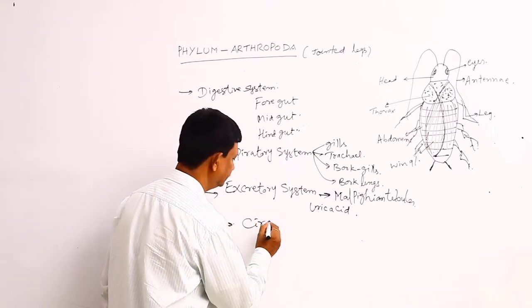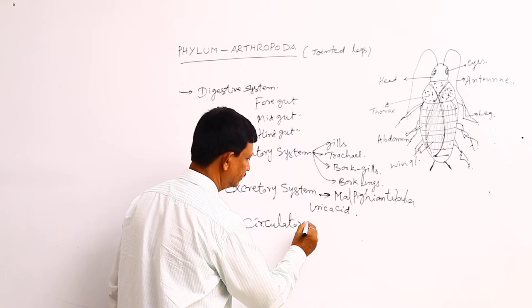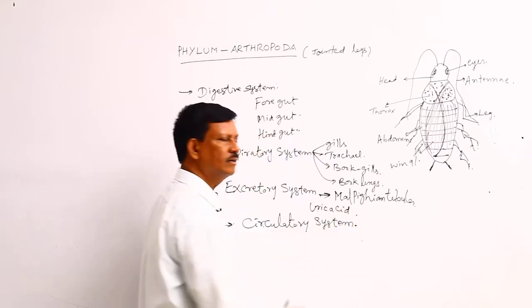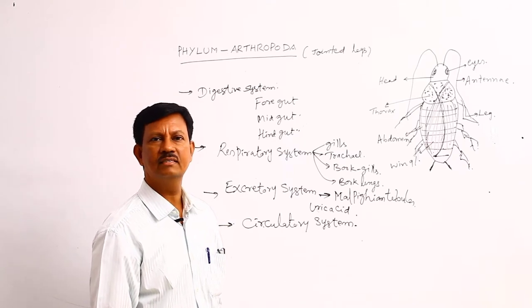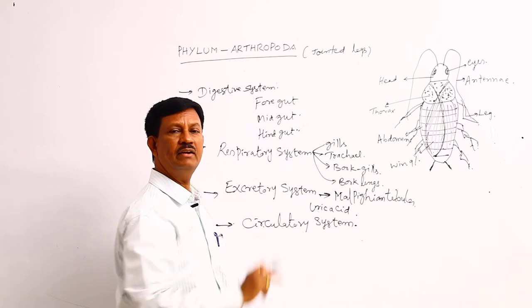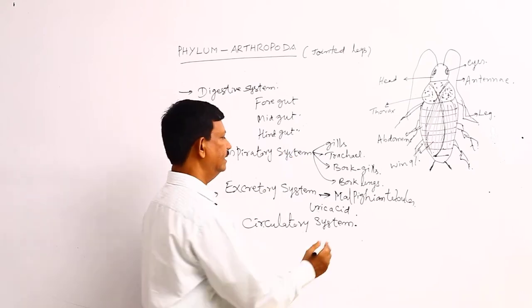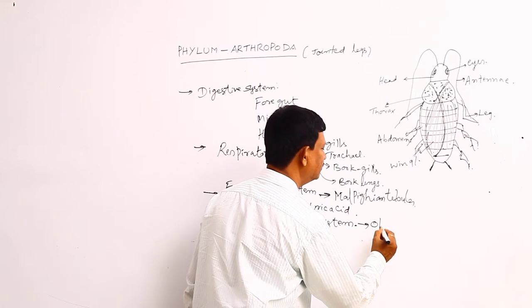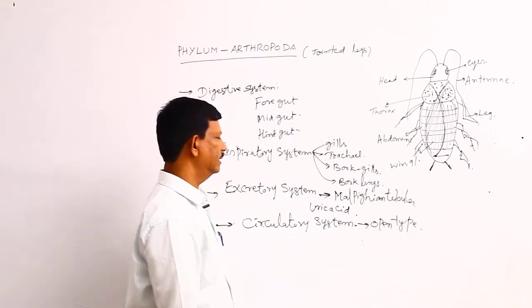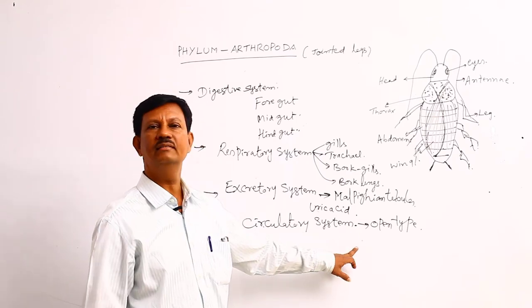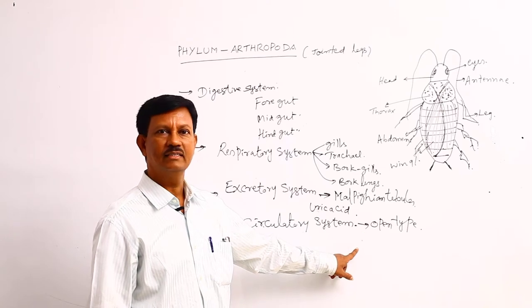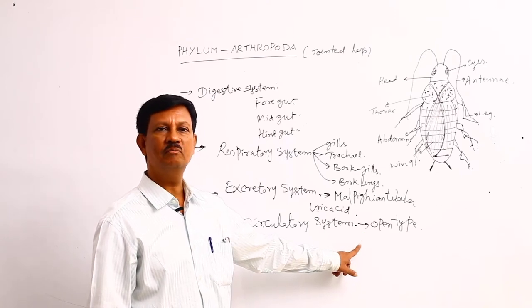In the circulatory system, blood is not found in the blood vessels, but blood is found in the body cavity. Already we have discussed that the body cavity is a hemocoel. It is known as the open type of blood vascular system. Blood does not flow in the blood vessels; blood is found in the body cavity.